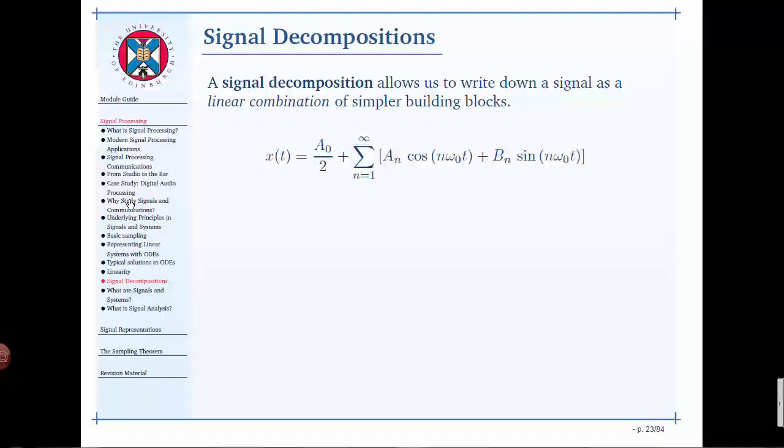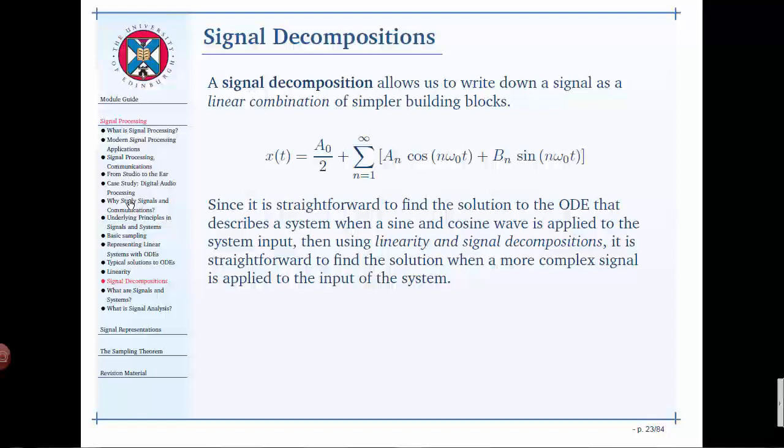This is a block of text which I don't like - I need to break that up into bullet points. The reason you get blocks of text like this is because it matches the handout. Since it's straightforward to find a solution to an ordinary differential equation that describes a system when a sine and cosine wave is applied to the system input, then using linearity and signal decompositions, it's straightforward to find a solution when a more complicated signal is applied to the input. And that's it.